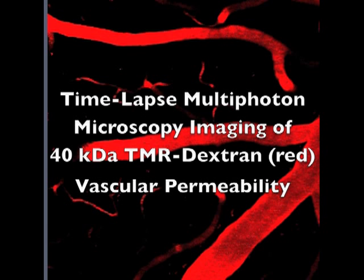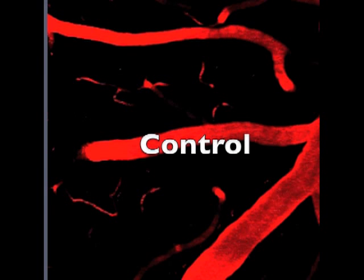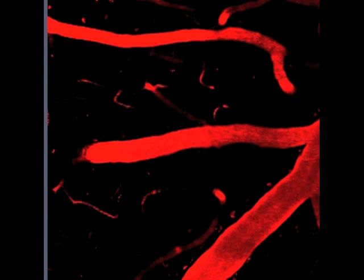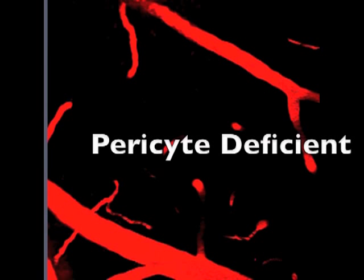Next, to determine if there is vascular permeability and blood-brain barrier breakdown present in pericyte-deficient mice, we utilized time-lapse imaging of a low molecular weight 40,000 DL tetramethylrhodamine-conjugated dextran. As you can see, in normal wild-type littermate controls, the dextran remains within the blood vessels over a 30-minute time period. However, there was significant leakage of the dextran from the blood vessels in pericyte-deficient mice.